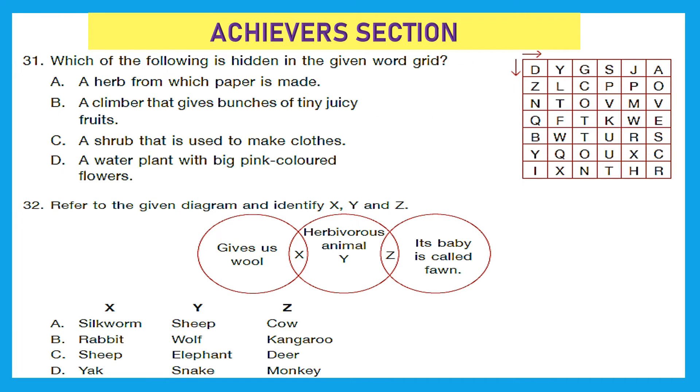Question 31. Which of the following is hidden in the given word grid? So let's find what are the options. A, a herb from which paper is made, that is papyrus. B, a climber that gives bunches of tiny juicy fruits, that's grapevine. C, a shrub that is used to make clothes, that is cotton. And D, a water plant with big pink colored flowers, that is lotus. Now let's go from top to bottom. Do we find anything? Oh, we got option C, that is cotton. So right answer here is option C.